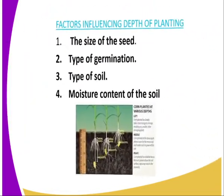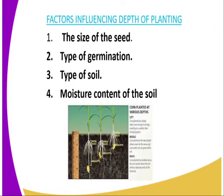On to the factors influencing the depth of planting. The first one is the size of the seed. For instance, a wheat seed or a millet seed is small in size compared to a maize seed. A wheat or millet seed requires a greater depth compared to a maize seed, because a small seed will easily be blown by the wind, and therefore it will require a higher depth.